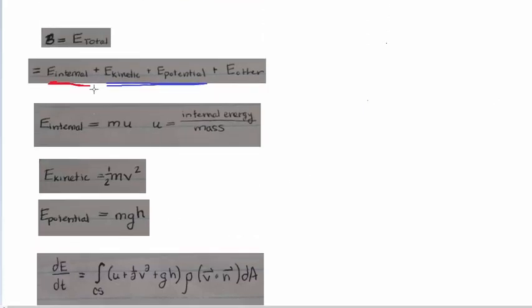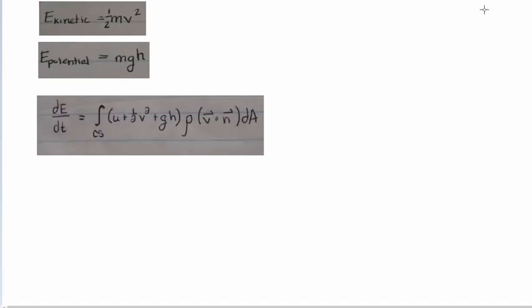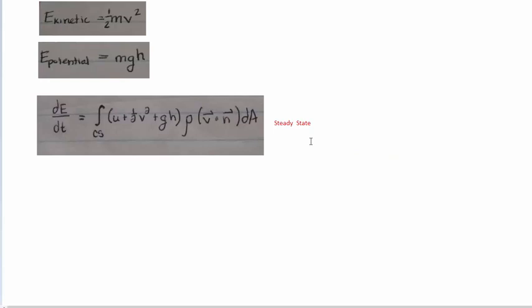With that defined, we can now write our Reynolds transport theorem. This beta comes over as dE/dt. What goes into the control volume and control surface terms is beta divided by M, so you get U, half V squared, and g·h. I've already made one simplifying assumption here: steady state. If you remember from previous videos, steady state makes the control volume integral go to zero because there's a time derivative in that expression, so you lose the control volume term.